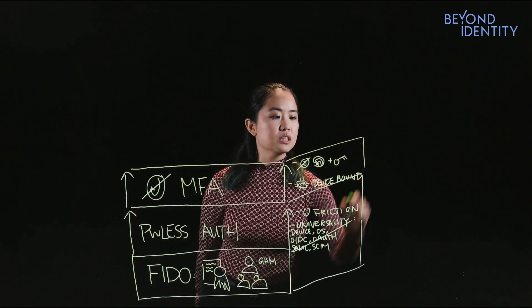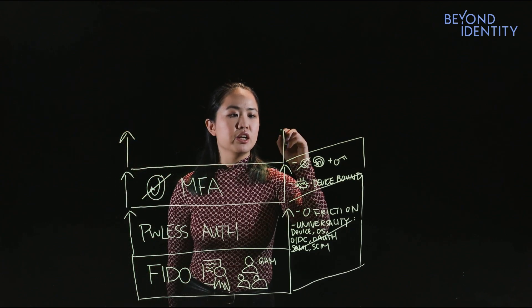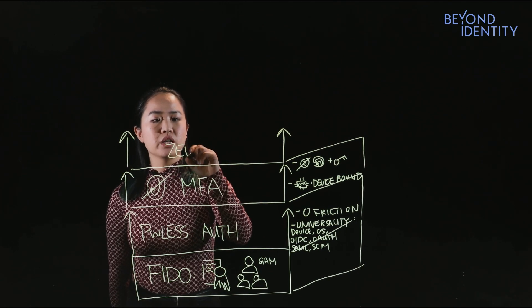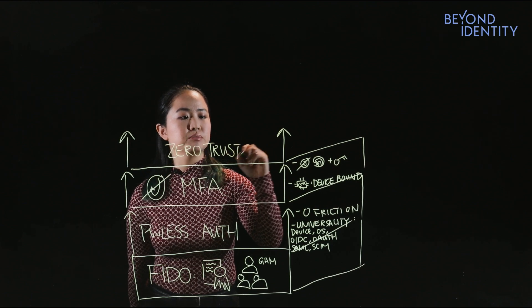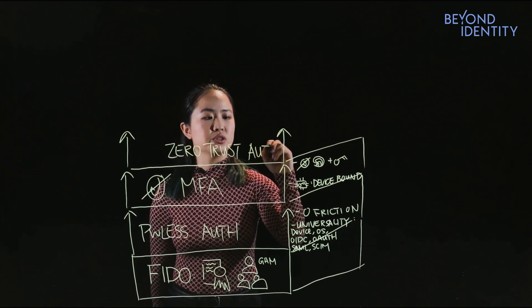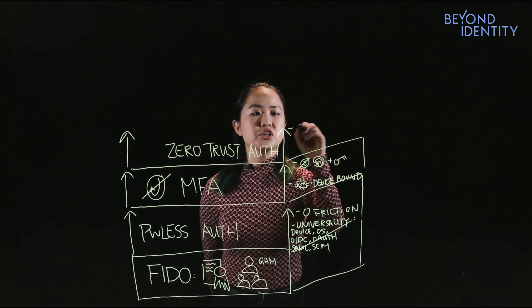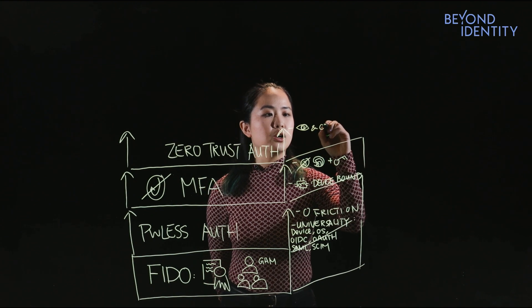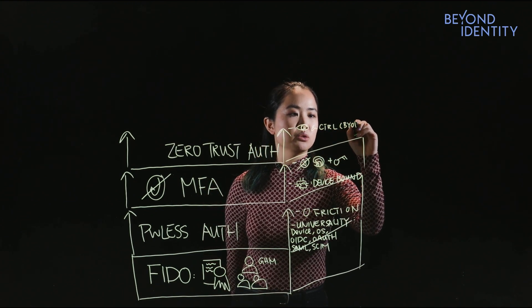The work is still not done because we now have this concept of zero trust in which you should never trust and always verify. So in the context of zero trust, what does authentication look like? Well, the first thing that it means is you need to have visibility and control over all of the endpoints in your fleet, including bring your own devices.